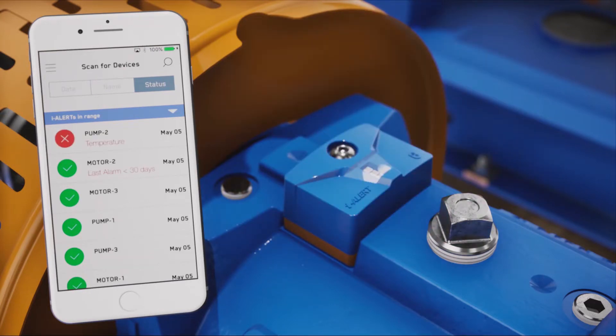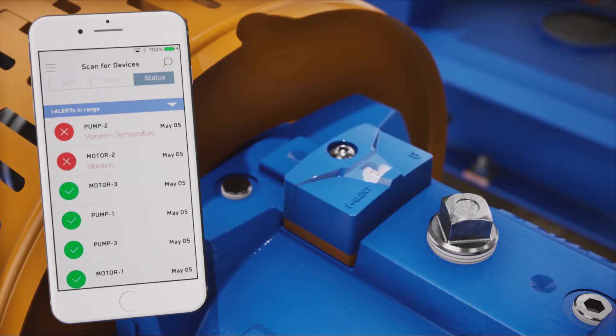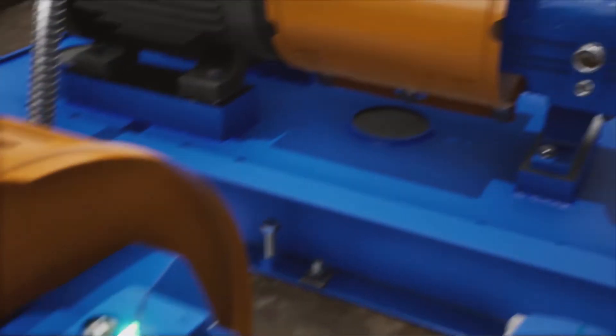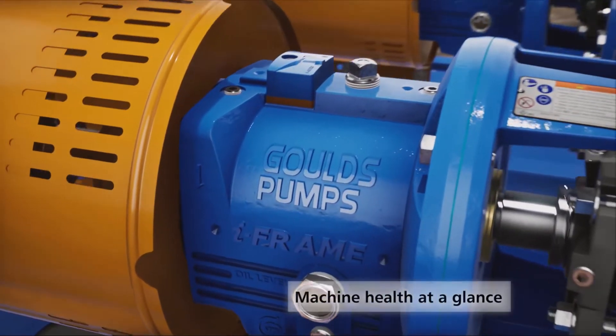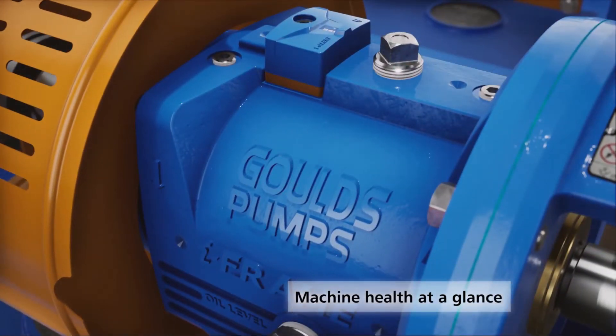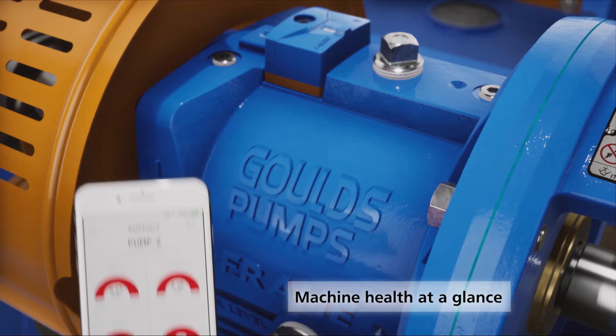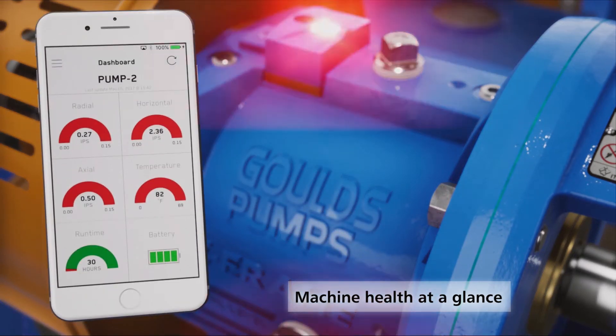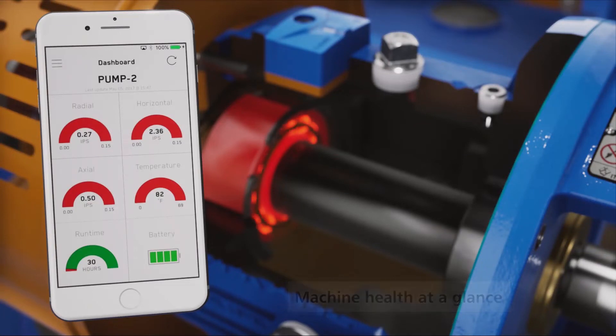With EyeAlert 2, you can monitor your equipment from a safe distance, even those that are difficult to access. The EyeAlert 2 will show you the health of your machines at a glance. If the vibration or temperature rises above the set limits for two consecutive readings, the EyeAlert 2 will begin to blink red and broadcast an alarm message.